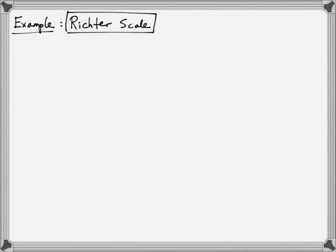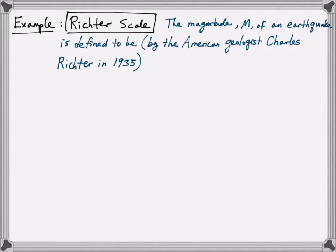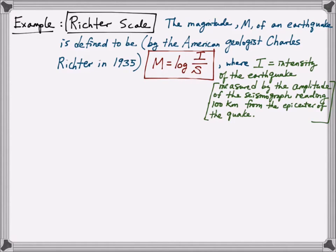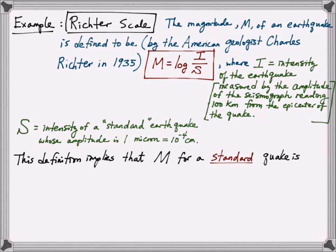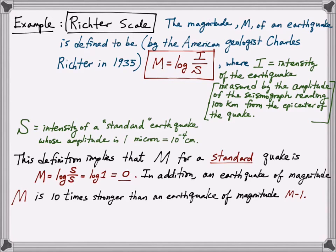Another example of a physical phenomenon that can be modeled using a log function is the Richter scale. The magnitude M of an earthquake is defined to be, this definition was given by American geologist Charles Richter in 1935, log I over S. Where I is defined to be the intensity of the earthquake, that is measured by the amplitude of the seismograph reading 100 kilometers from the epicenter of the quake, and S is the intensity of a standard earthquake whose amplitude is 1 micron, and 1 micron is equal to 10 to the negative 4 centimeters. This definition implies that the magnitude of a standard earthquake is 0. In addition, an earthquake of a magnitude M is 10 times stronger than the earthquake of a magnitude M-1. For example, an earthquake of magnitude 6 is 10 times stronger than an earthquake of magnitude 5.